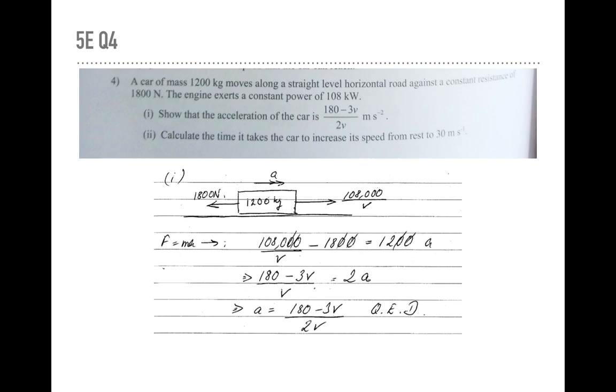It drives against the constant resistance of 1800. And the car engine has a constant power of 108,000 watts. Convert the power to force by dividing the number by velocity and the resistance is 1800. So the net force in this case will be the 108,000 over V minus the 1800. And we're going to leave that equal to MA. Same as before, just divide both sides by 1000 to get A on its own. And you get A is equal to 180 minus 3 V over 2 V.